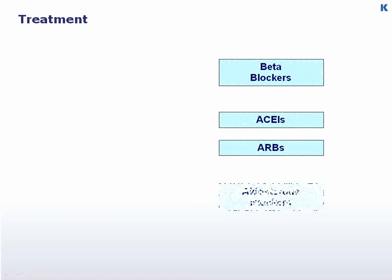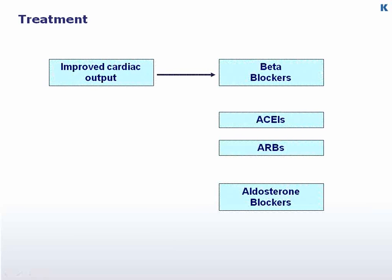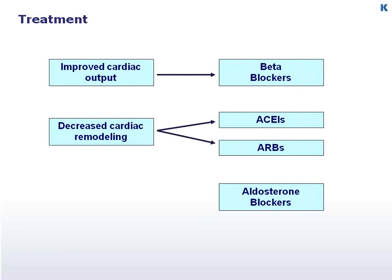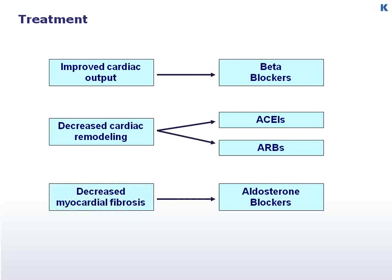The first four classes of drugs — beta blockers, ACE inhibitors, ARBs, and the aldosterone receptor antagonists — are drugs of choice because they have all proven to reduce mortality. Each of the four modalities of choice has one major effect: improved cardiac output with beta blockers, decreased adverse cardiac remodeling with ACE inhibitors and ARBs, and decreased myocardial fibrosis with the aldosterone blockers.